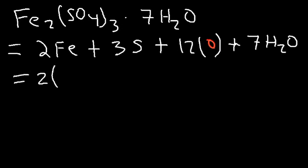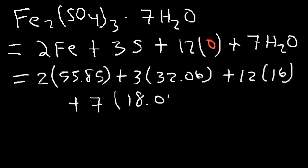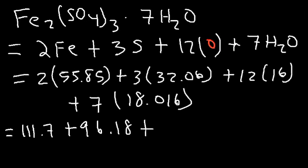So the molar mass for Fe is 55.85. The atomic mass for sulfur is 32.06. And for oxygen, it's going to be 16 times 12. And we already know the molar mass for H2O. The whole thing, we said it's 18.016, so we're just going to multiply that by seven. So 2 times 55.85 is 111.7, and 3 times 32.096 is 96.18. 12 times 16 is 192, and 7 times 18.016 is 126.112. So now we just got to add the four numbers.